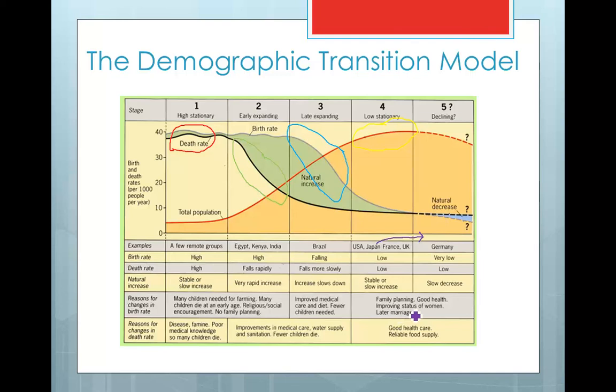This is due to improved status of women, more family planning, people having later marriages, and this real choice of women which allows them to have a career as opposed to following a traditional route of having a family. And this leads to a declining population in stage five.